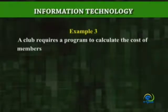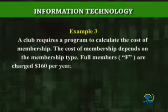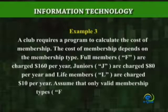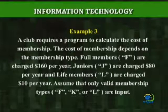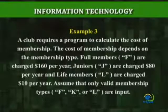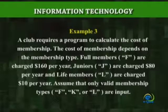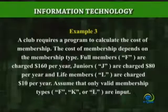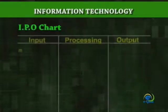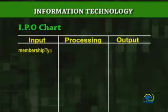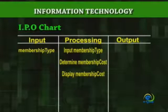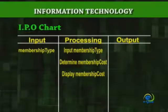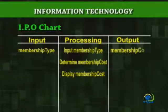Example 3: A club requires a program to calculate the cost of membership. The cost of membership depends on the membership type. Full members (F) are charged $160 per year, juniors (J) are charged $80 per year, and life members (L) are charged $10 per year. Assume that only valid membership types F, J, or L are input. In the input column, we put membership type. In the processing column: input membership type, determine membership cost, and display membership cost. In the output column, we put membership cost.